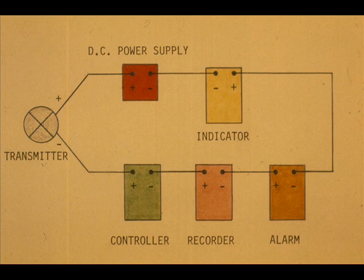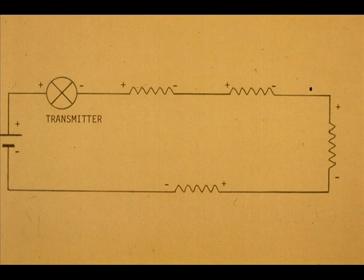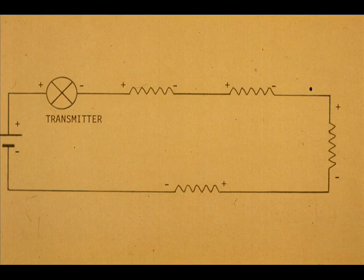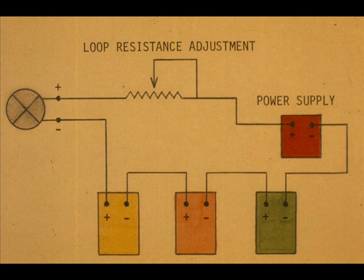Depending on the manufacturer, the loop components other than the transmitter may be hooked in series. The series system can be compared to a battery and resistor circuit, where the resistors represent the loop components. Controllers, many recorders, and other components are actually voltmeters that measure voltage drops across their respective loop resistors. Some recorders in use are current devices and perform like ammeters. The series loop is sensitive to the total loop resistance. When an item is added or subtracted, the total loop resistance is maintained correct by adjusting the variable resistor.